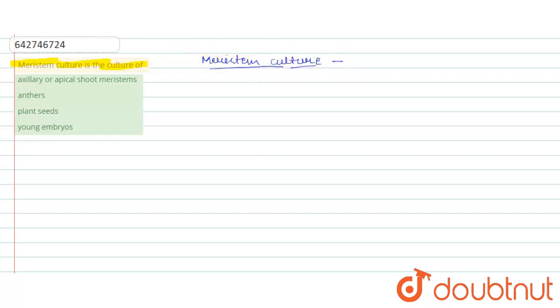The meristem culture is the process by which we can culture the meristem of plant, and this is a type of tissue culture